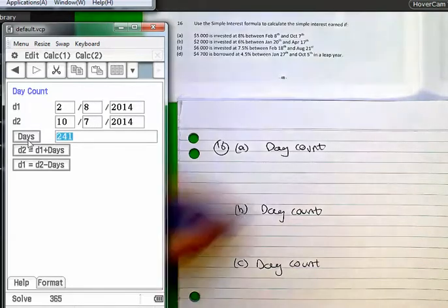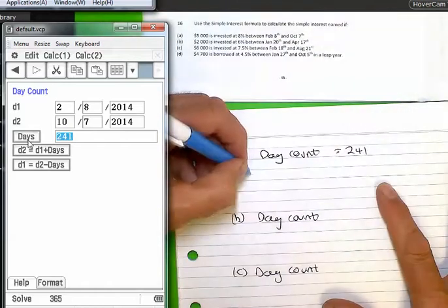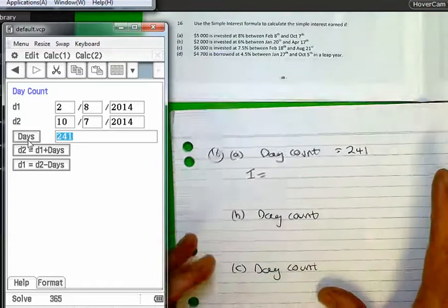And you can see the day count is equal to 241. I can then go ahead as we've done before and find the simple interest.